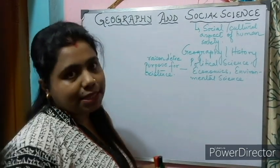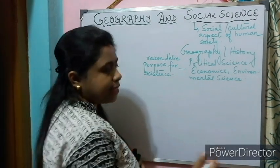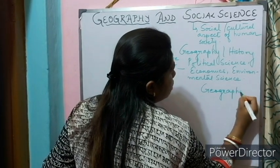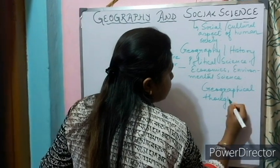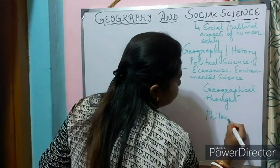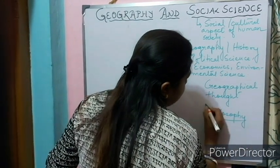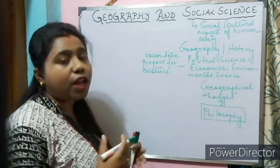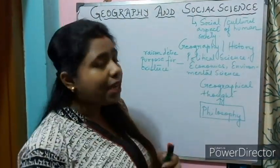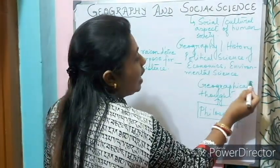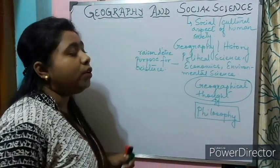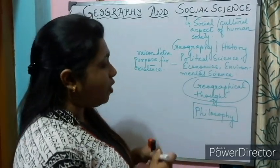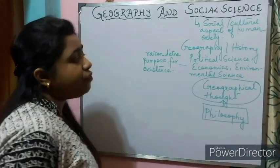Let us try to understand the relationship between geography and social science with one example. Geographical thought is a branch of geography which is related to philosophy. Philosophy has actually provided the route to geographical thought, and while in the process of evaluation it had to pass through distinct geographical experiences which led to the introduction of geographical thought in university curriculum at the college level as a part of geography.